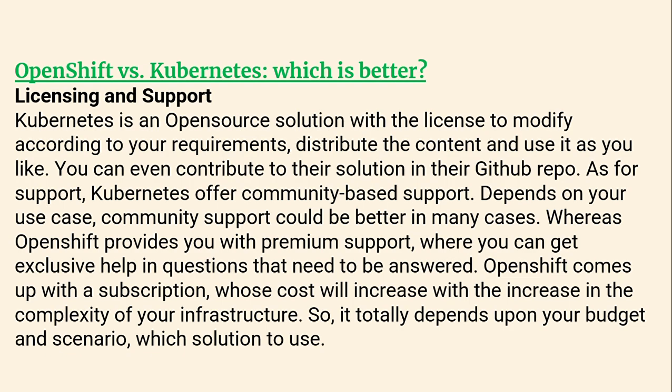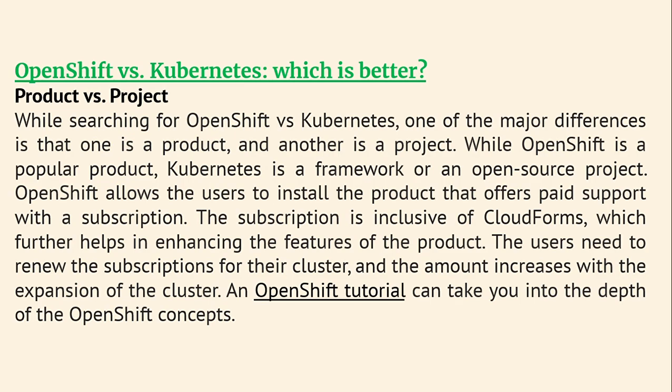For licensing and support: Kubernetes is an open source solution with a license to modify, distribute, and use as you like — you can even contribute to their GitHub repo. Community support depends on your use case and can be quite good. OpenShift provides premium support with exclusive help. OpenShift comes with a subscription whose cost increases with the complexity of your infrastructure, so the choice depends on your budget and scenarios. One major difference is that OpenShift is a product while Kubernetes is a framework or open source project.